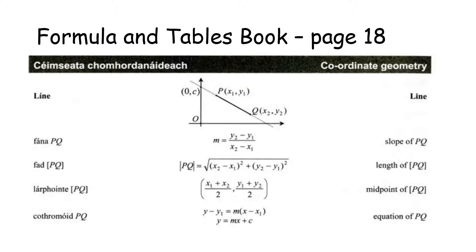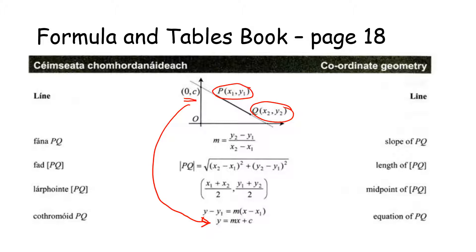Note that there's a picture at the top of page 18 which can be really useful. This picture shows two points and how to label them: P is (X1, Y1) and Q is (X2, Y2). It also gives us an important piece of information — OC — which links to the equation of the line. That letter C is linked in the equation formula, so be aware that it's not just the four formulas that are important; that little picture will also be of great benefit to you.